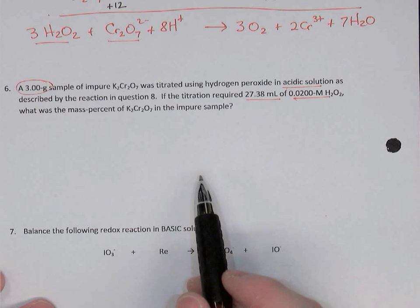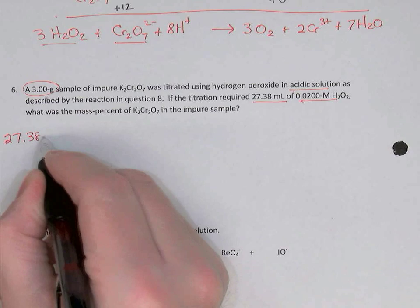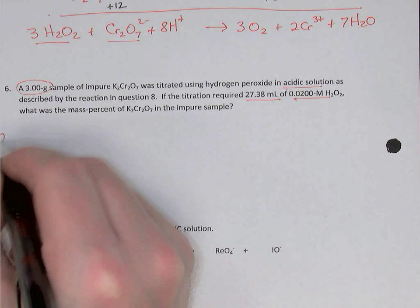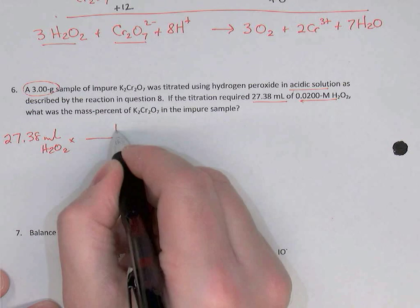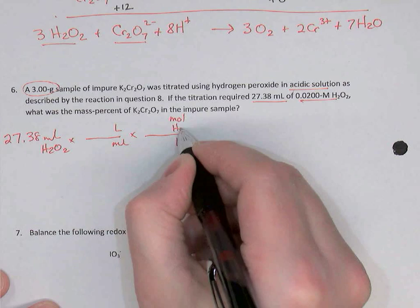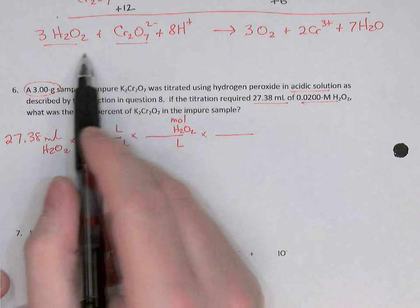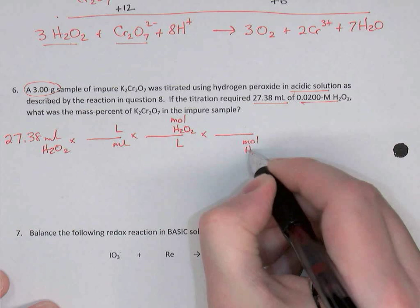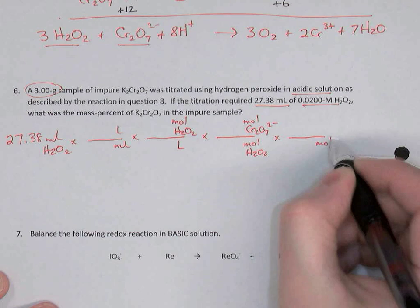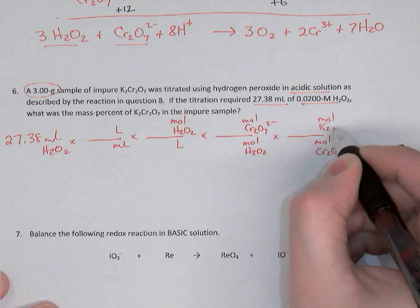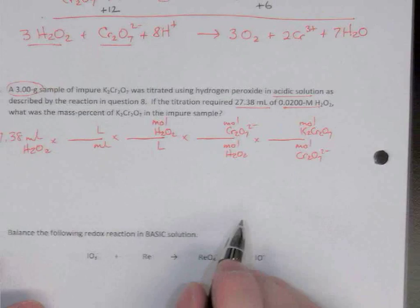Let's use the titration information to find the mass of potassium dichromate in that three gram sample. We'll start with 27.38 milliliters of the hydrogen peroxide, switch from milliliters to liters, then using the concentration switch from liters to moles of hydrogen peroxide. Then, using the balanced equation, switch from moles of peroxide to moles of dichromate, then from moles of dichromate to moles of potassium dichromate, and finally to grams of potassium dichromate.